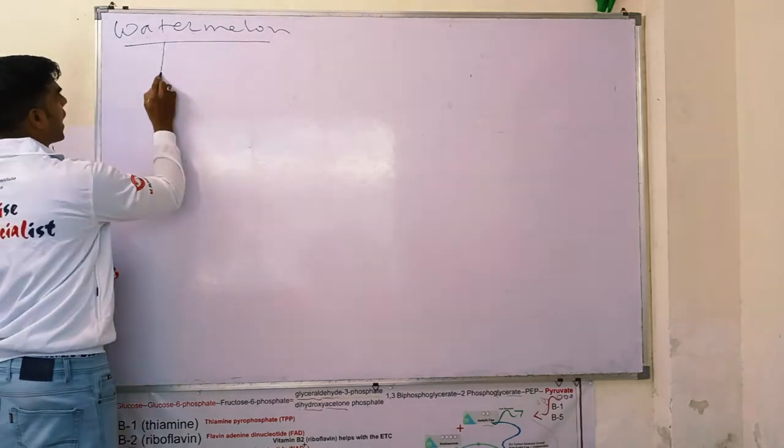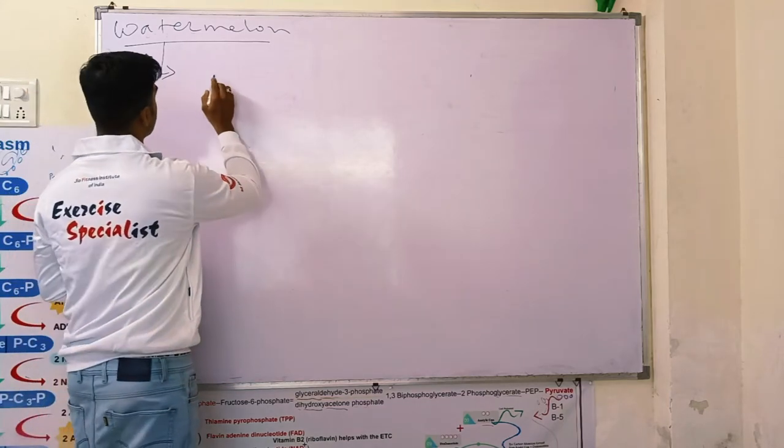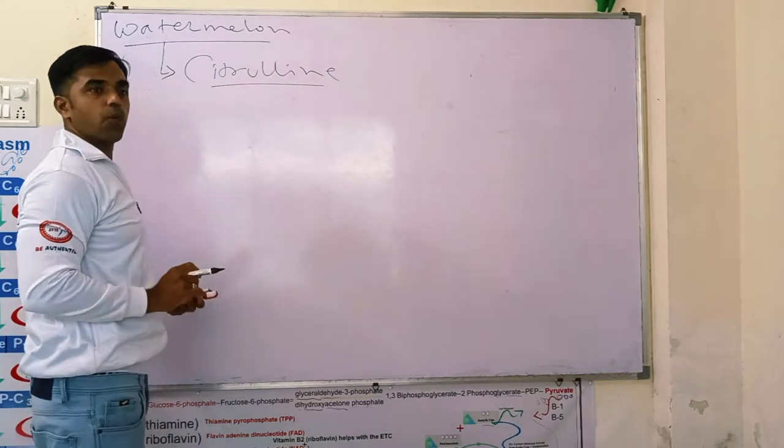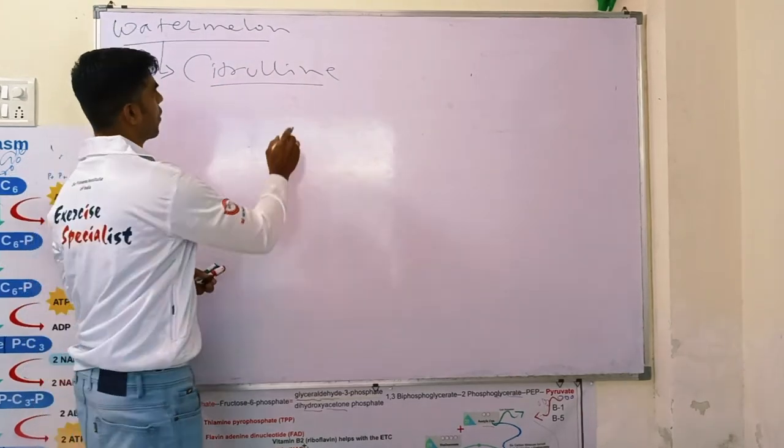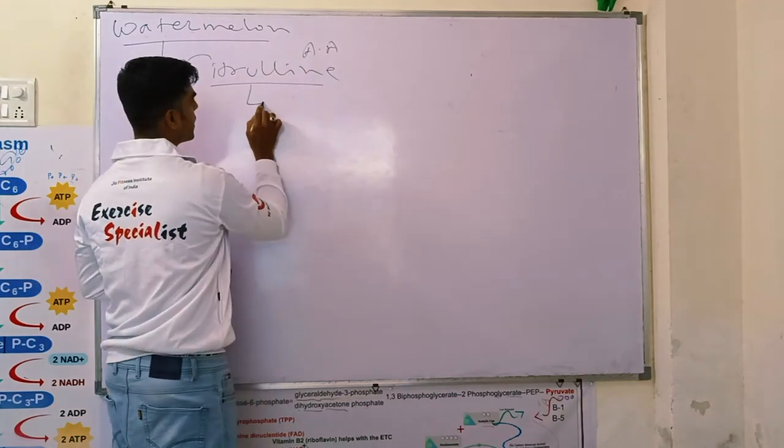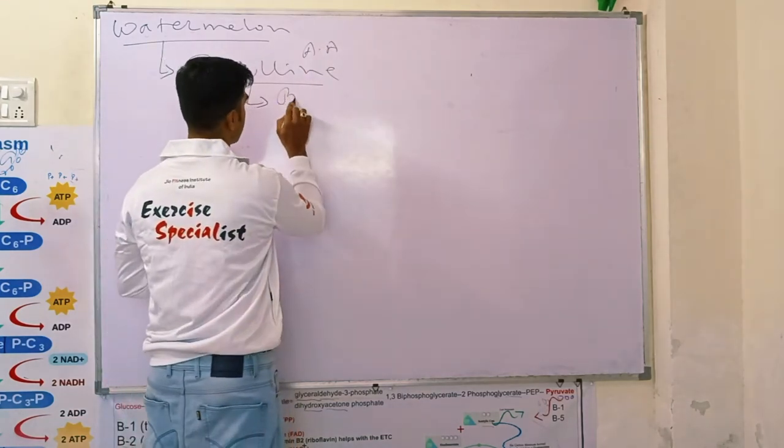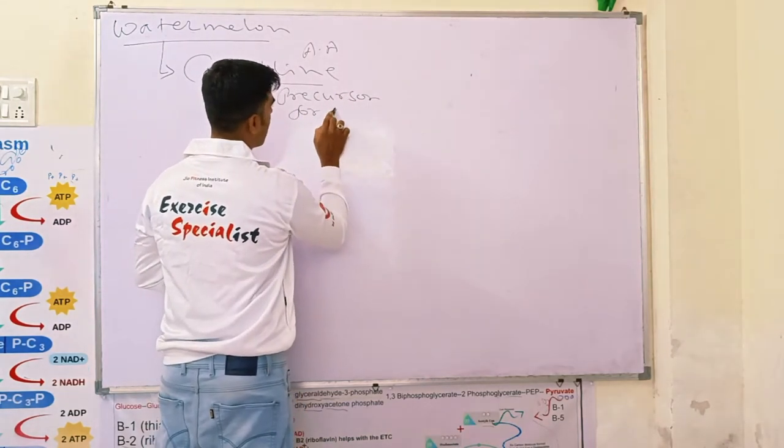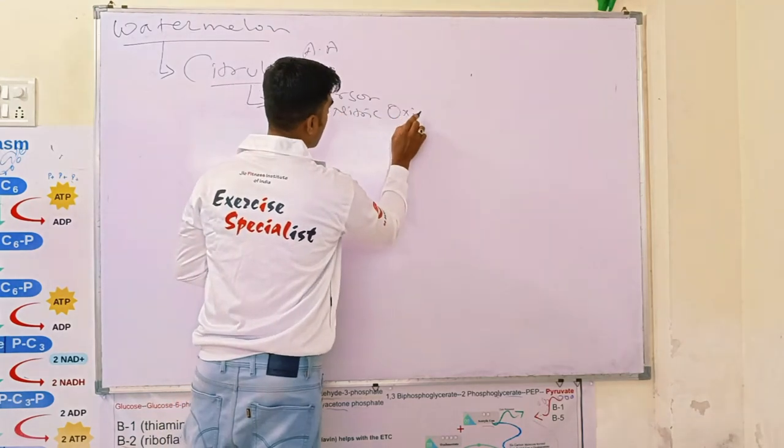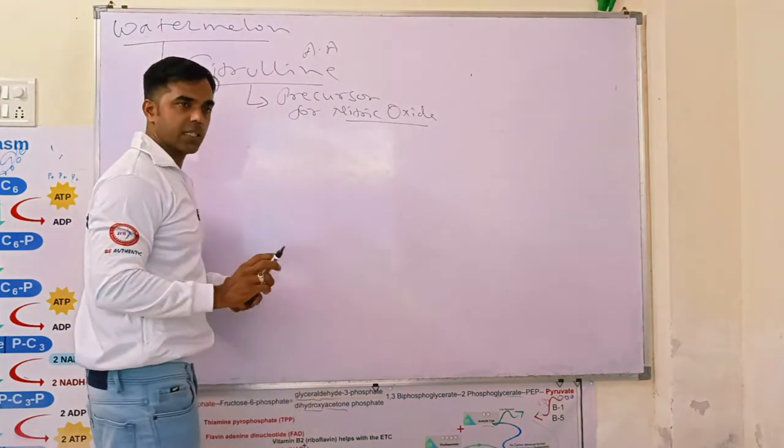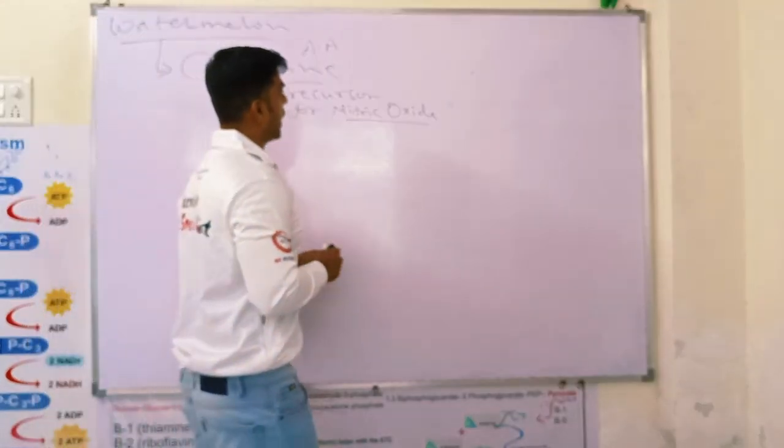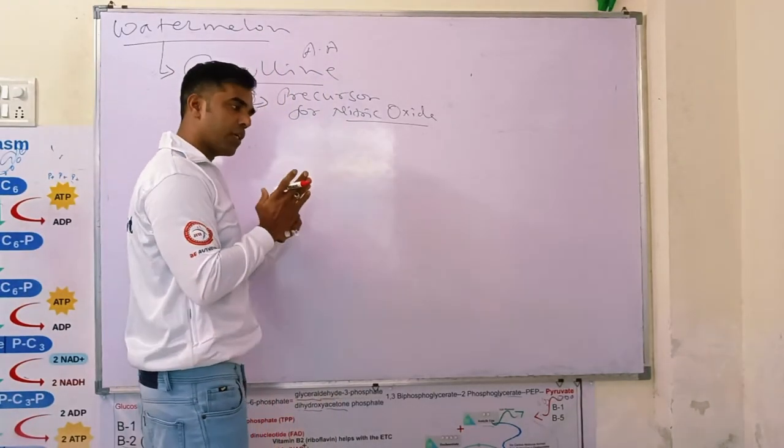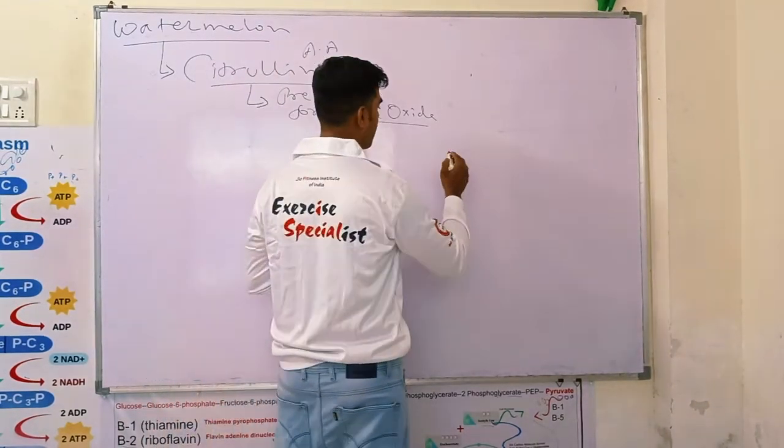Basically this watermelon has an amino acid called citrulline. Now citrulline malate is an amino acid. This is used as precursor for nitric oxide. Now basically nitric oxide when it is formed it has very important function keeping your artery healthy.